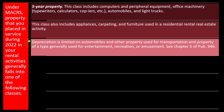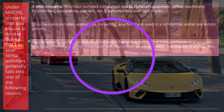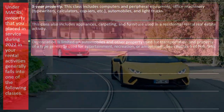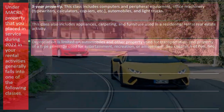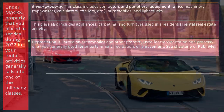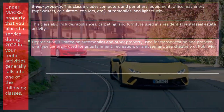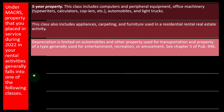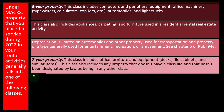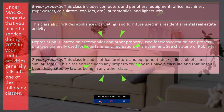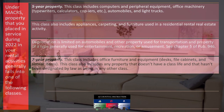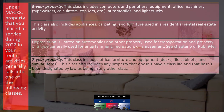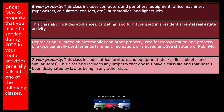Depreciation on automobiles is limited on automobiles and other transportation property and property generally used for entertainment, recreation, or amusement. The IRS is skeptical here because people sometimes buy extravagant automobiles and write them off as business use. Seven-year property includes office furniture and equipment such as desks and file cabinets. This class also includes any property that doesn't have a class life and hasn't been designated by law as being in any other class — making it essentially the default class.